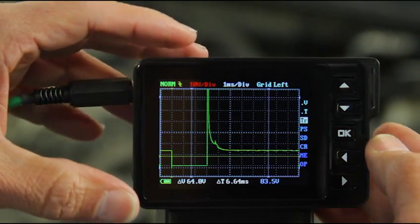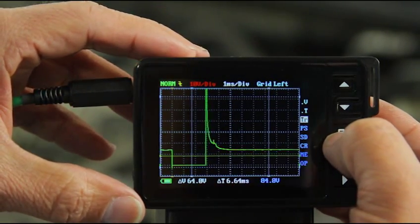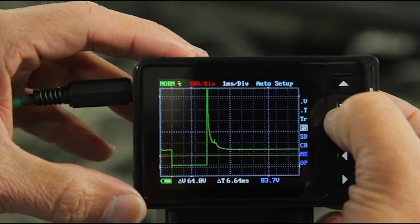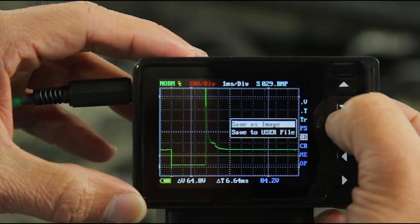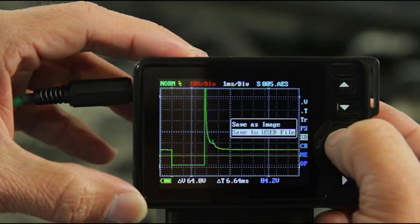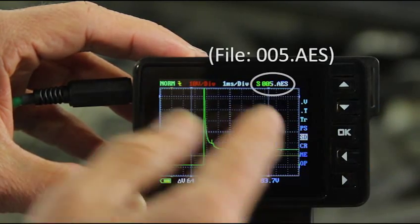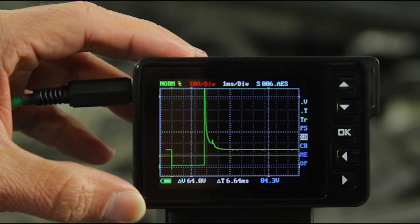Next step is I'm going to save this preset that I just created by going to SD. I'm going to select save to user file and hold down the OK key. Up on the top right you can see that it's going to file 004.